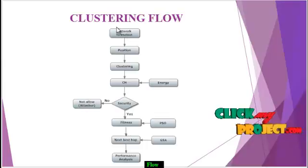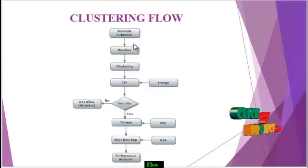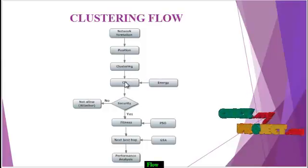First, network formation. Here I implemented thirty-one nodes, then calculating all the nodes' positions. The clustering depends upon the node position, then the cluster head is selected. Cluster head selection is based on the energy in the network. The clustering is formed until all nodes become members of any one cluster.